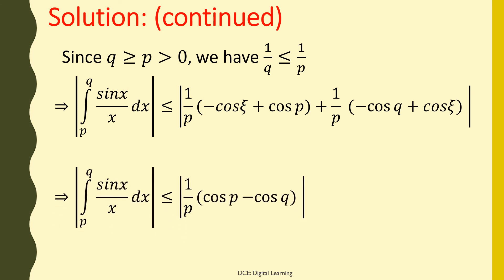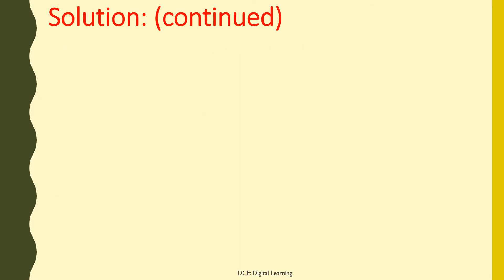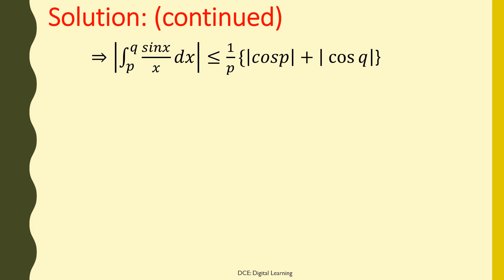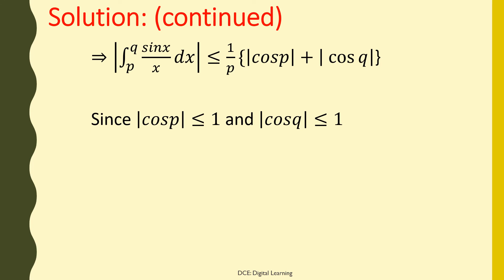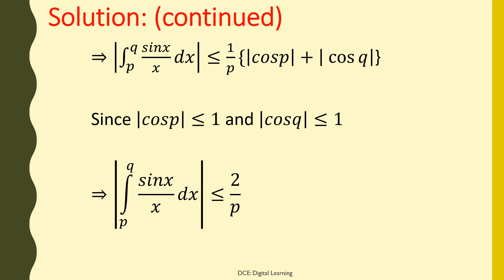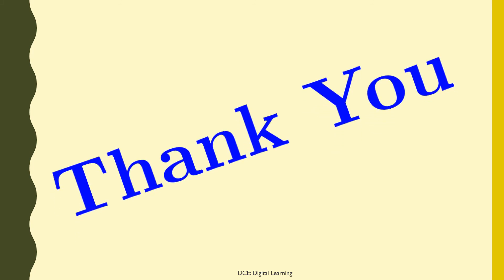This implies |∫sin(x)/x dx from p to q| ≤ (1/p)|cos p - cos q| ≤ (1/p)(|cos p| + |cos q|) ≤ 2/p. This completes the solution. That's all in this video, thank you.